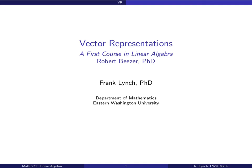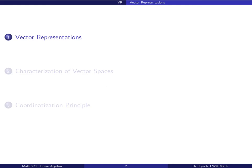Welcome folks. In this video we'll define a vector representation, which will turn out to be an invertible linear transformation. We'll see how that allows us to characterize vector spaces in terms of vector spaces of column vectors, and we'll talk about this coordinatization principle.